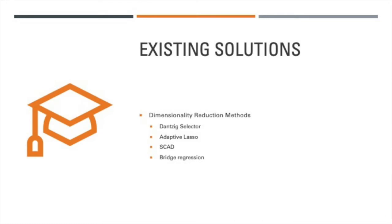There are many existing solutions for dimensionality reduction, such as the Dantzig selector, adaptive lasso, SCAD, ridge regression, and many more, which all work best when the sample size n is greater than the number of predictors p.